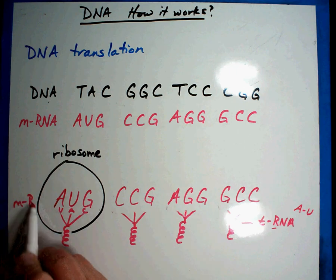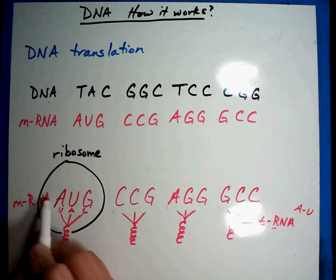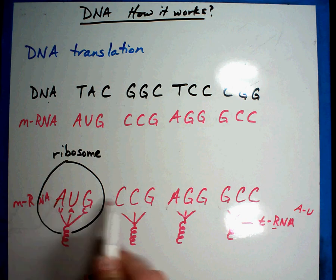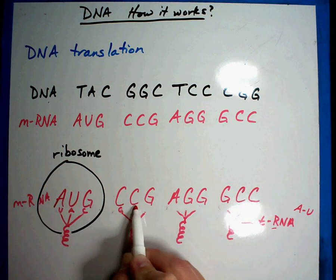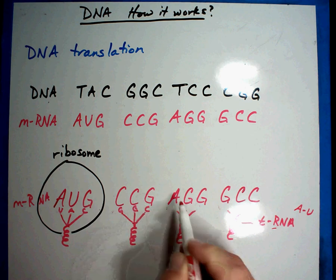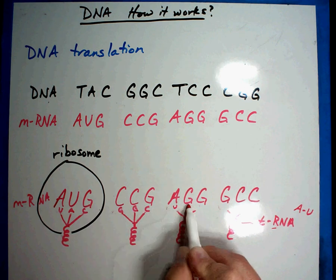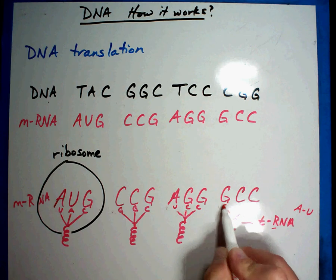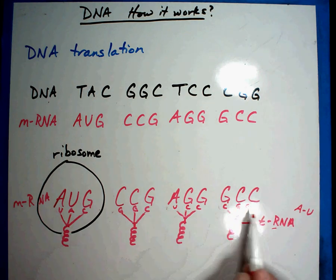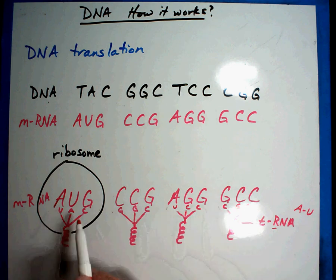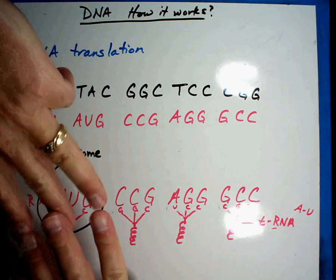So this is my messenger RNA. There's my RNA, starting here, and it's going to stick to it, G, G, C, U, C, C, C, G, G. Now, make those really small because you don't have to remember these, but this is how they stick together.